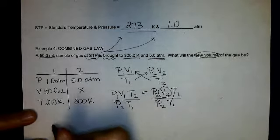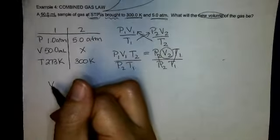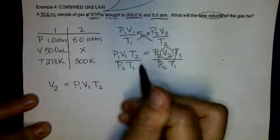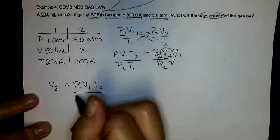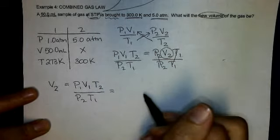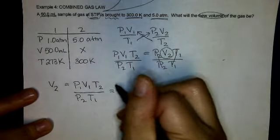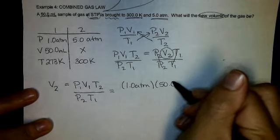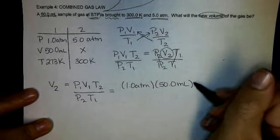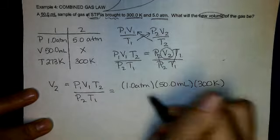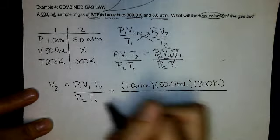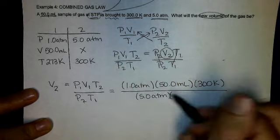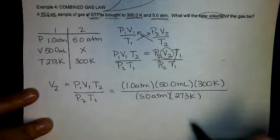So they cancel out, so I'm left with V2 is equal to P1V1 T2, my top, divided by the bottom, P2 T1. And now I just plug in from my chart. P1 was 1 atmosphere. My V1, 50 milliliters. My T2, 300 Kelvin. Divided by my P2, 5.0 atmospheres. My T1, 273 Kelvin.